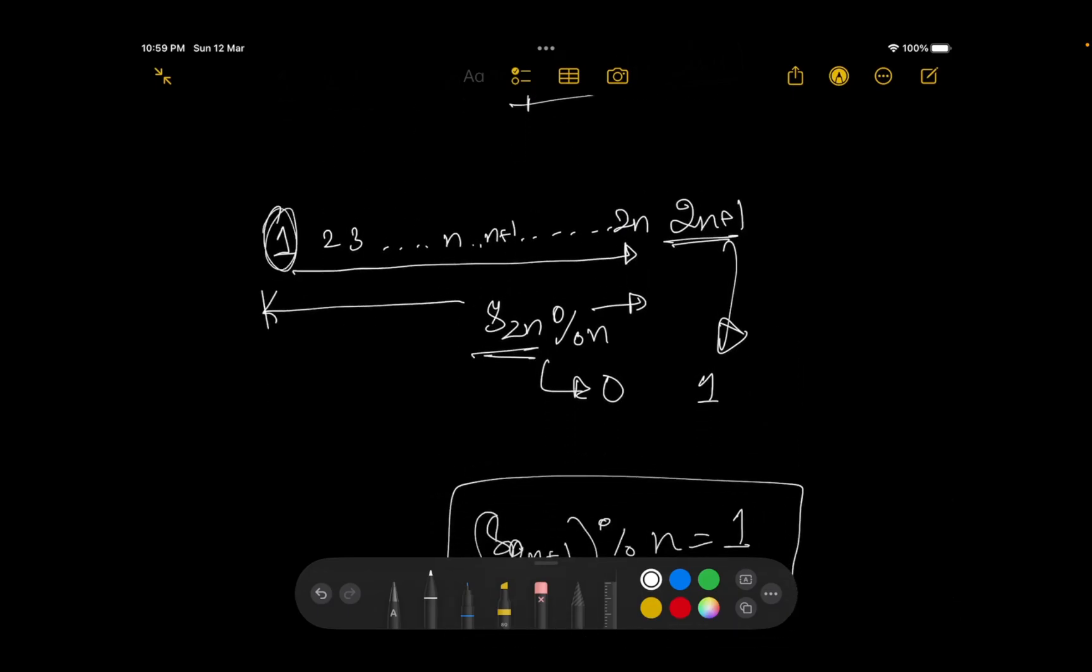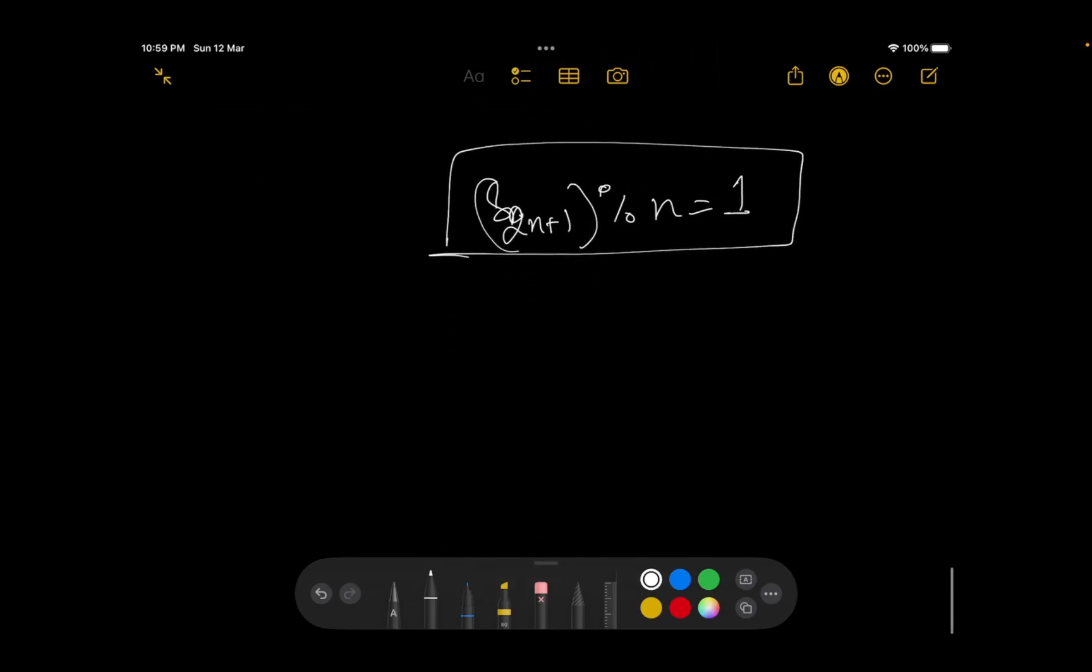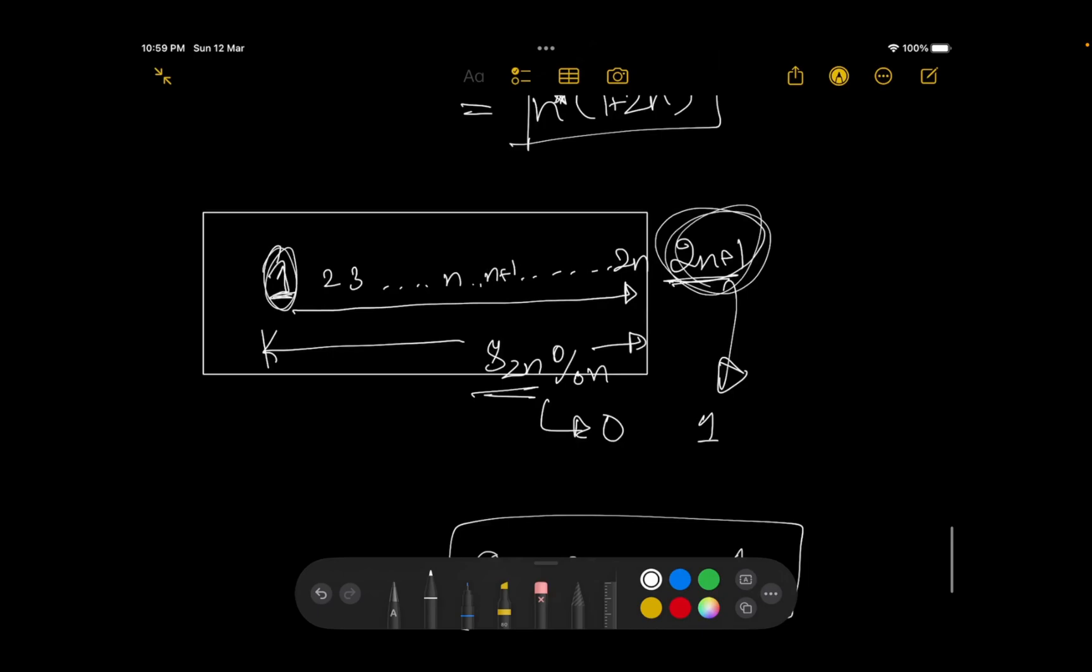But wait, we have already checked for value 1. So if we didn't get a valid solution in this particular range, we are not going to get a valid solution by this also. So it is of no use. So by that, what I can say is, that at max, you have to traverse from 1 to 2n.